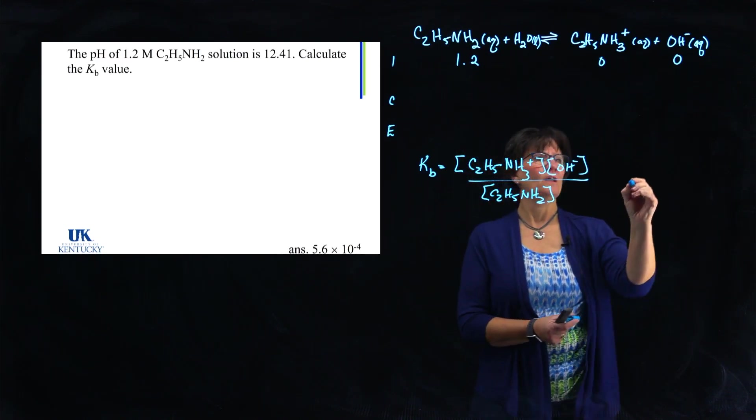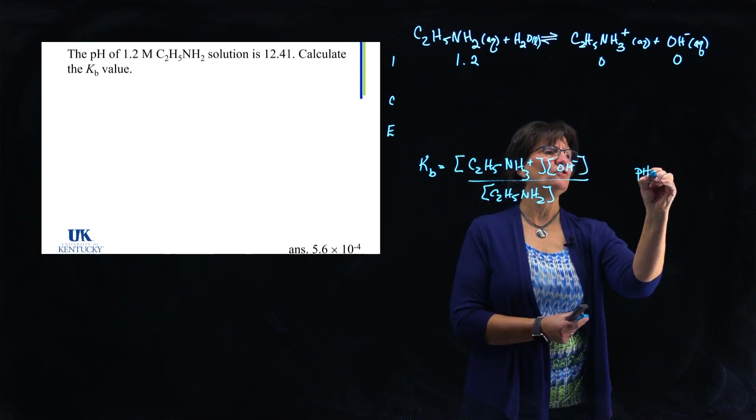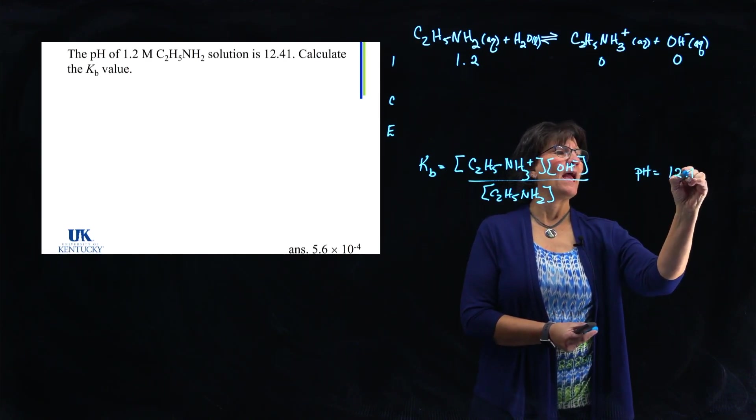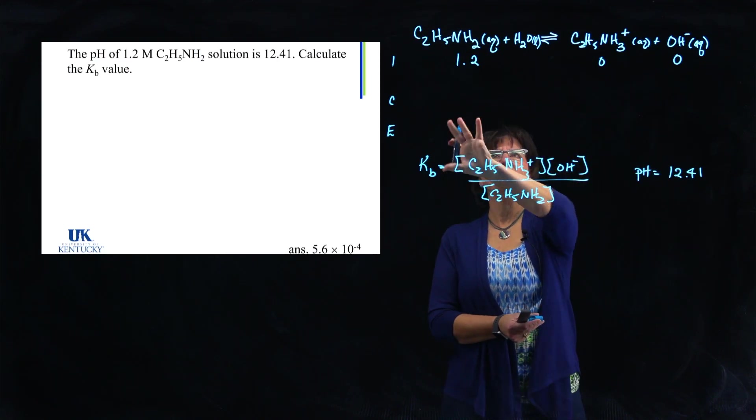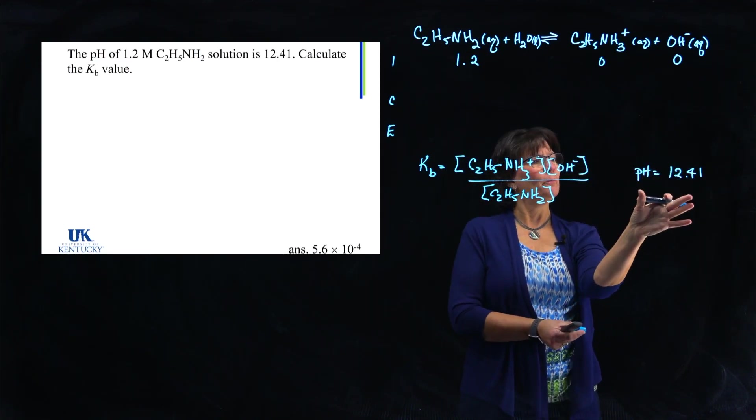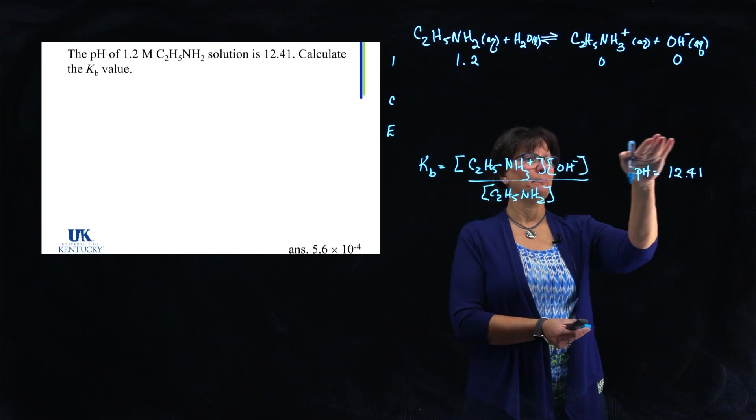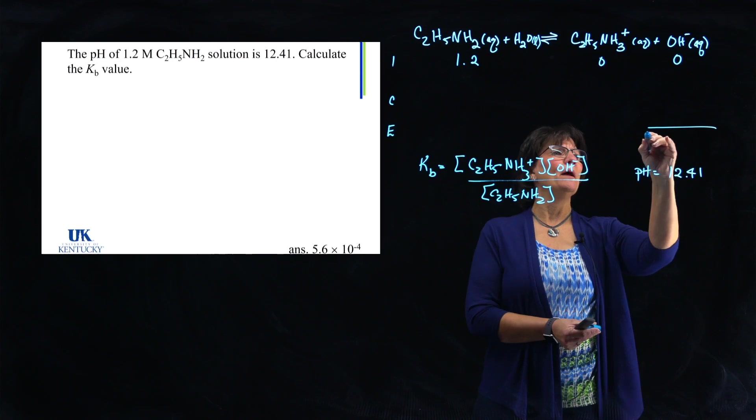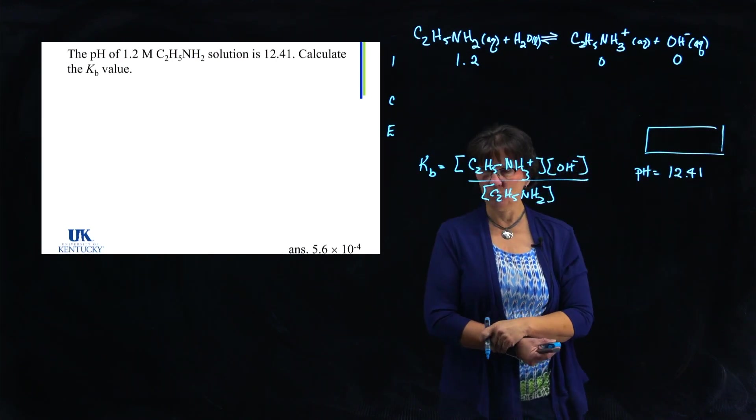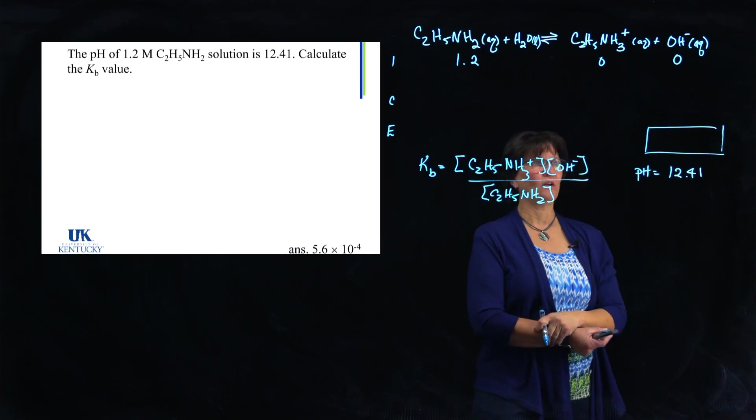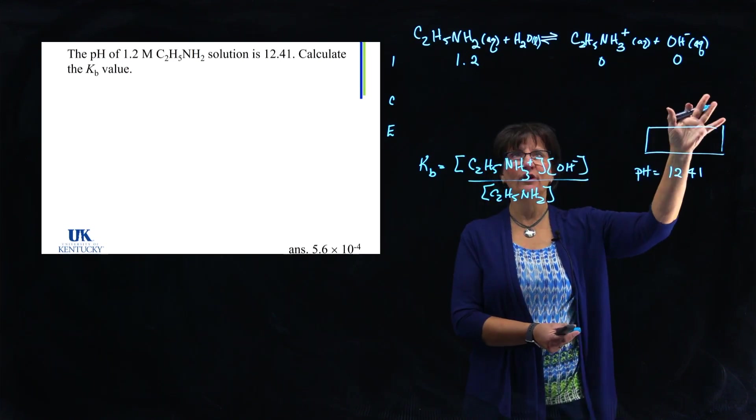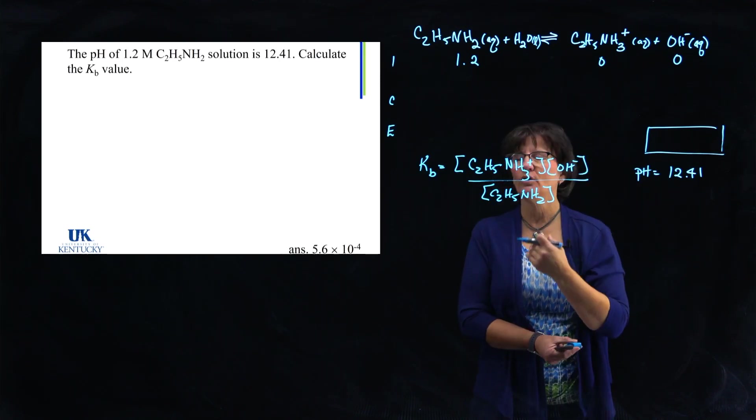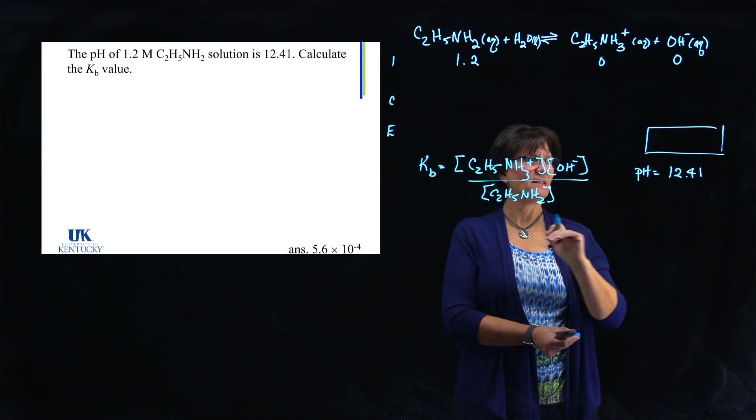Now before I put anything else in, I see that they gave me the pH. So I'm going to come over here and I'm going to use that pH value of 12.41. And I'm going to be able to use this to get something in this table. When I know the pH, I know something about the equilibrium. And from the pH I'll be able to get a number for what sits right there. I never want to just plug in X's, unknowns, into this equation because sometimes I don't need to. That's when I don't know the concentration values.